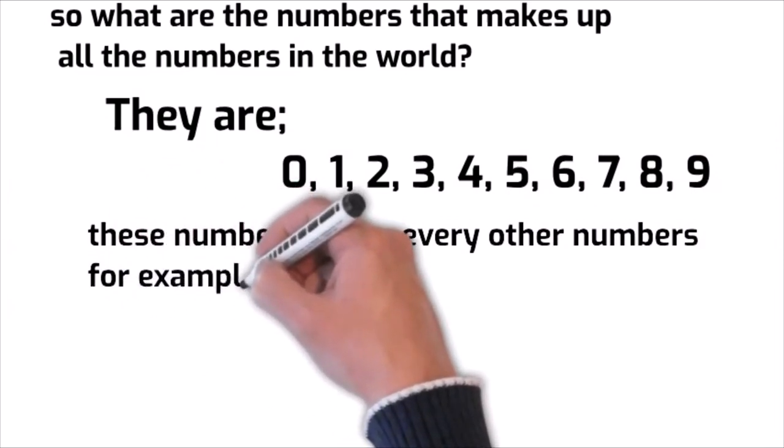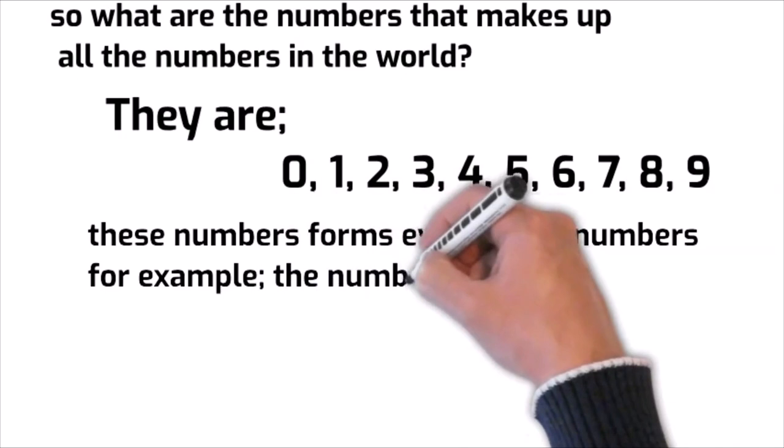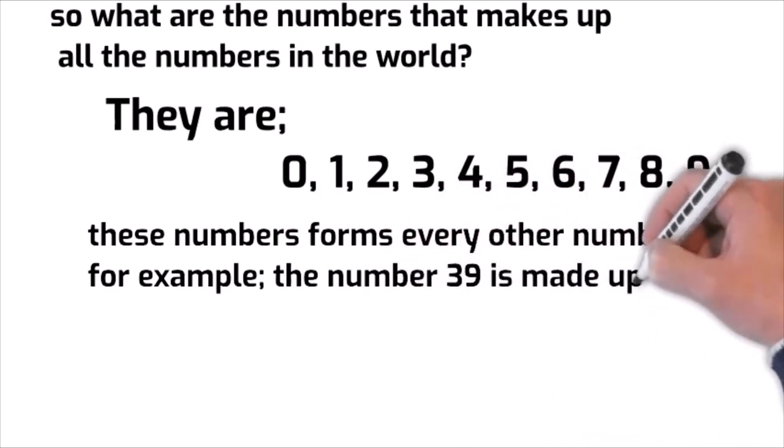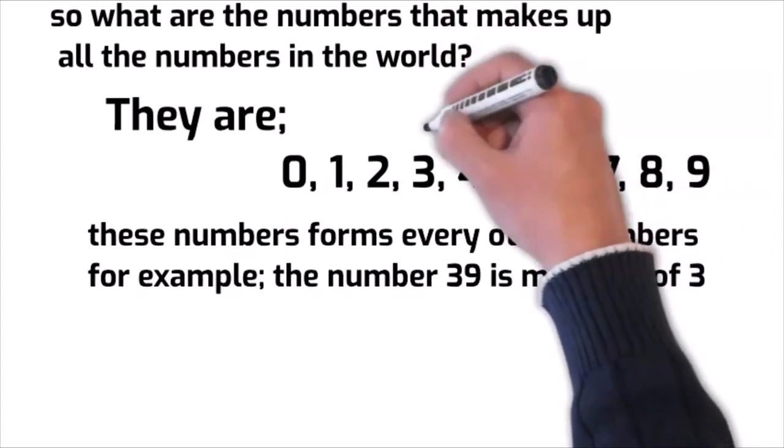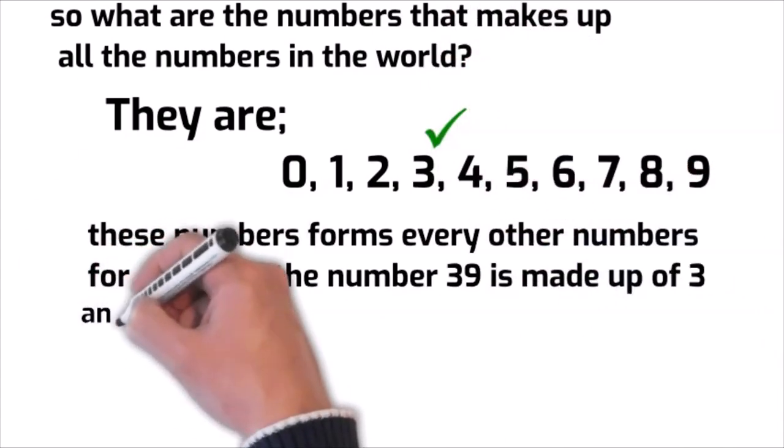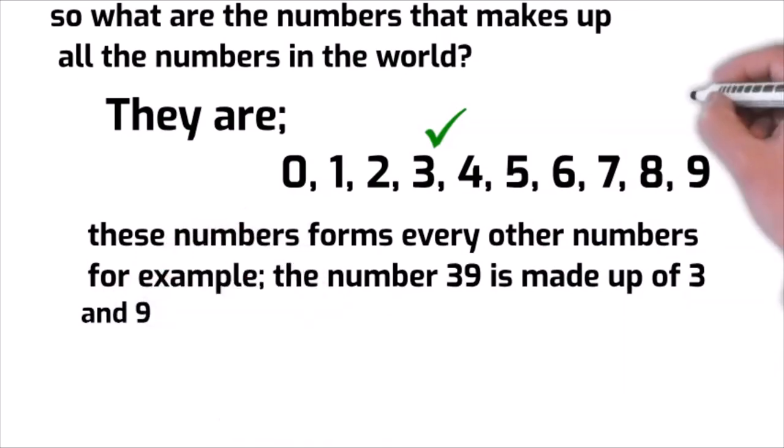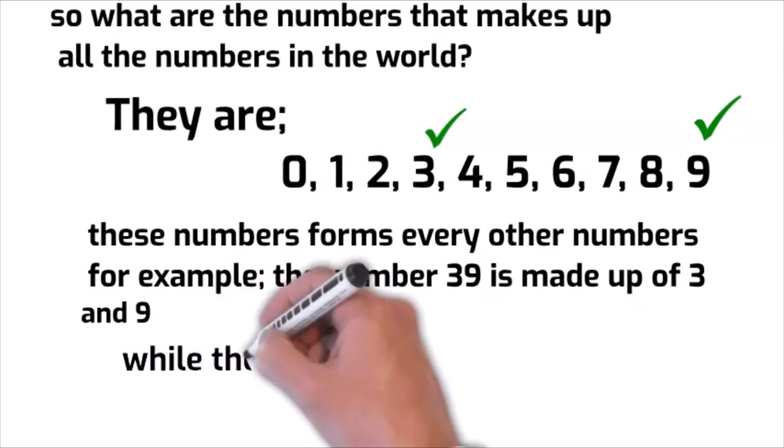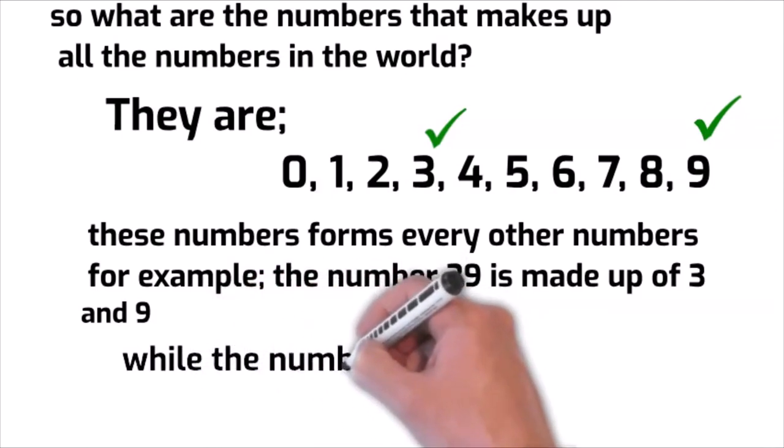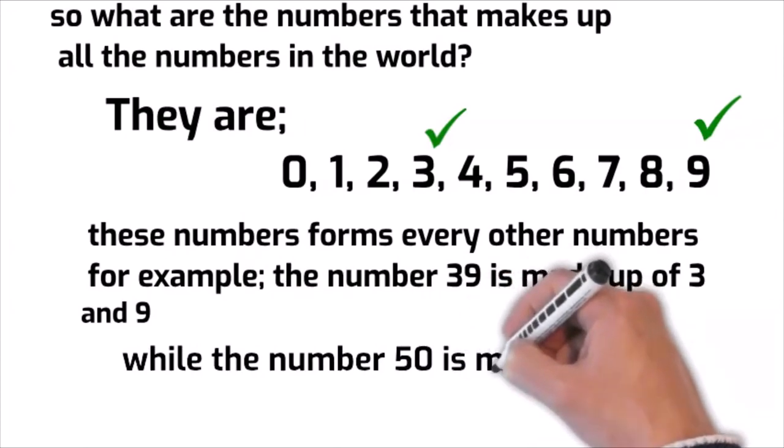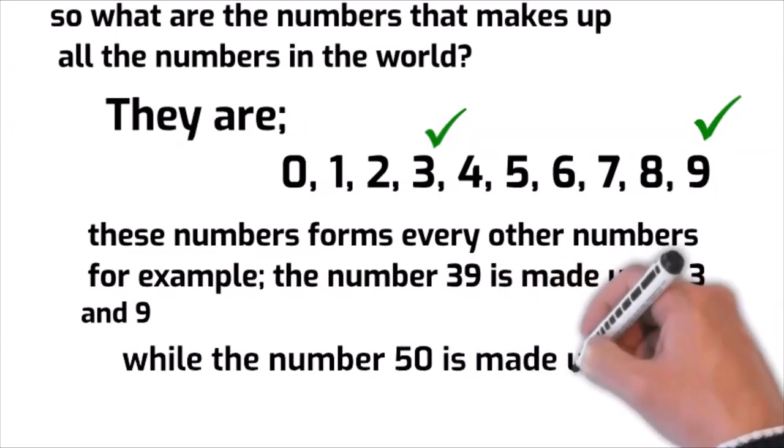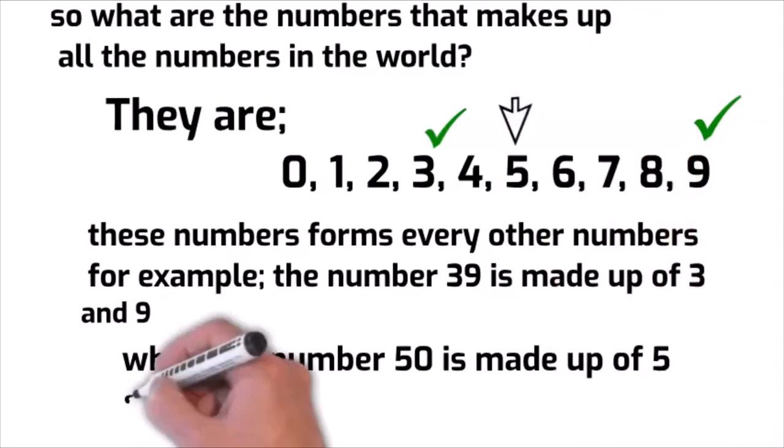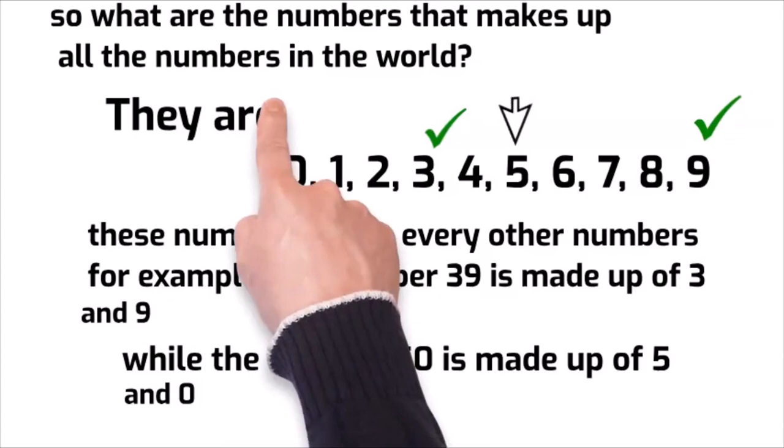For example, the number sixty-nine is made up of six and nine, while the number fifty is made up of five and zero.